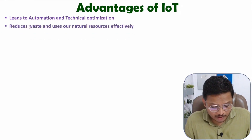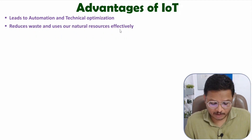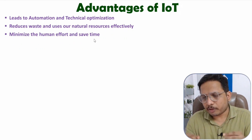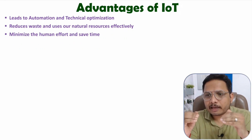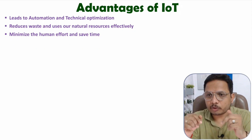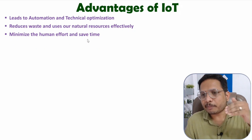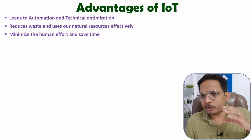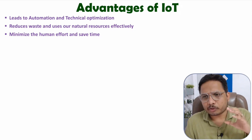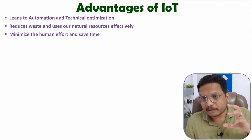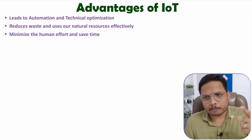IoT systems help to reduce waste, allowing us to use our natural resources more effectively. We also minimize human effort and save time. In the Internet of Things, when you create an application, the need for human interaction decreases, so you automatically save time. IoT applications will make decisions, and in some important situations, the need for humans is reduced. In normal situations, decisions are made automatically.